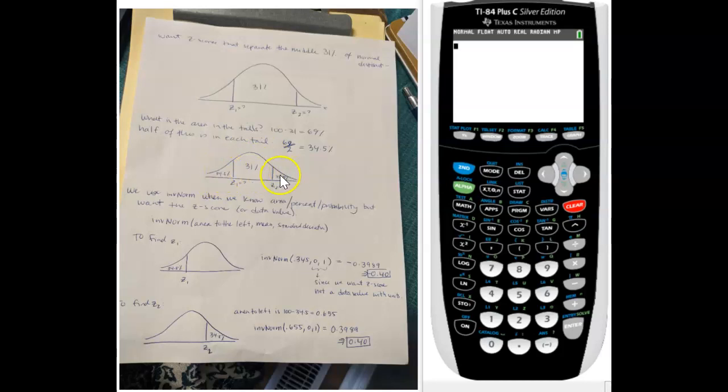So now we have more information: the middle 31%, the left tail is 34.5%, and the right tail is 34.5%. So when we have areas or their percentage or the probability and you want to find the z-score, that's when we use the invNorm function. You can use the normalcdf function when you have the z-score or data value and you want the probability or the percentage or the area.